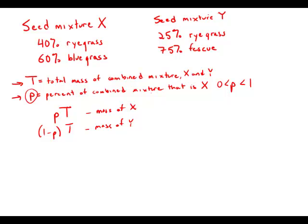Well, we know that from the mass of X, 40% of that is ryegrass. So 0.4PT is the ryegrass that's coming from mixture X. And then 0.25, one minus P times T is the amount of ryegrass coming from Y. And theoretically, this should account for all the ryegrass in the mixture. And this mixture T is 30% ryegrass.